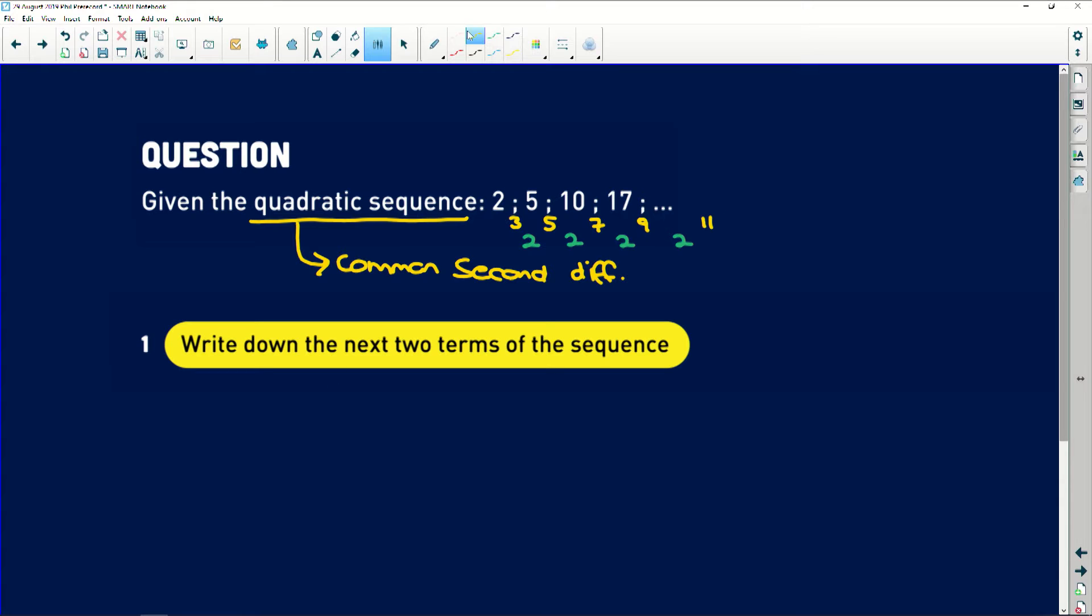So to find the next two terms, you just add on the first difference. So 17 plus 9 gives us 26, and 26 plus 11 is going to give us 37. Easy peasy lemon squeezy question. So 26 and 37. That's just them checking to see if you know what the sequence is doing.